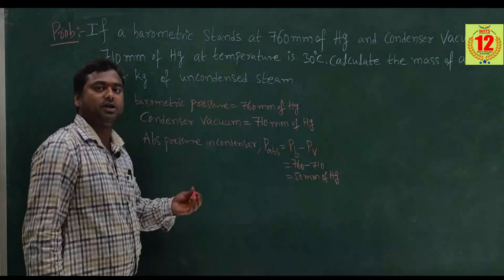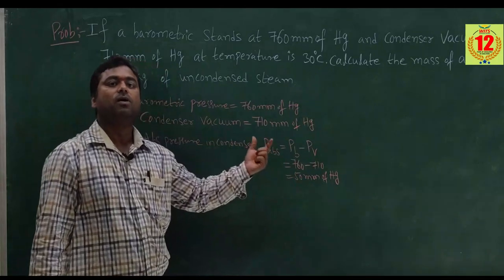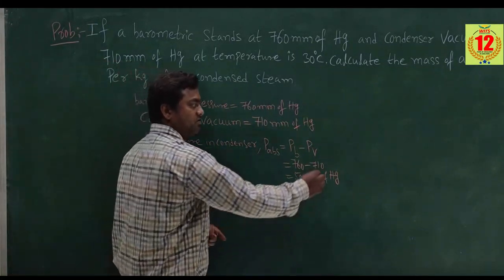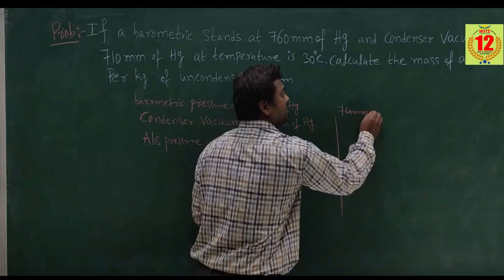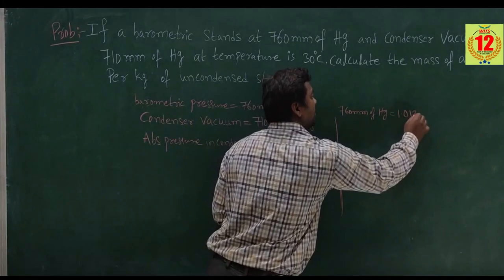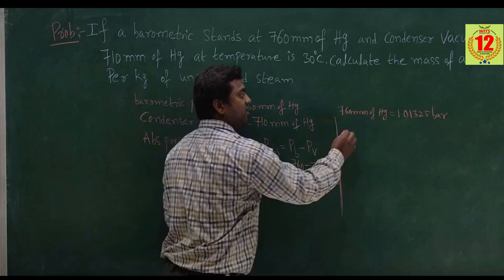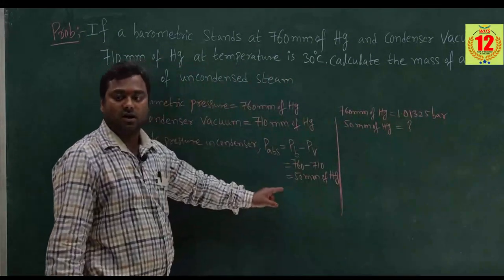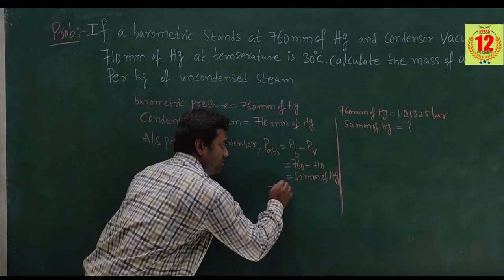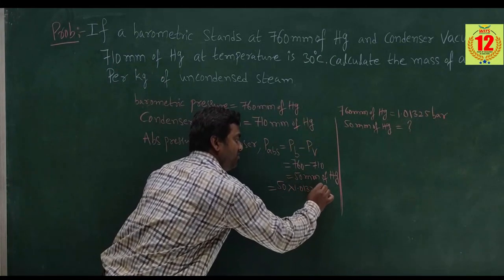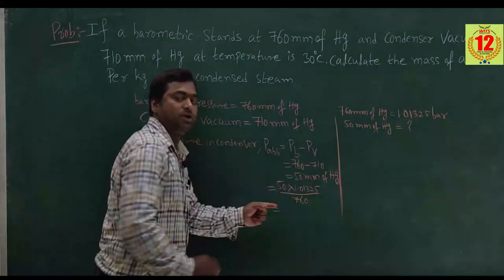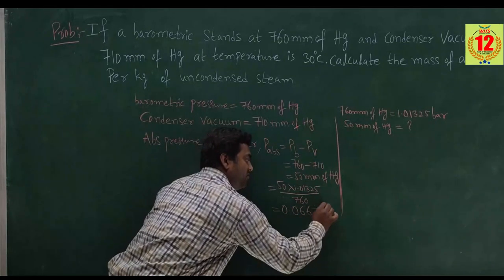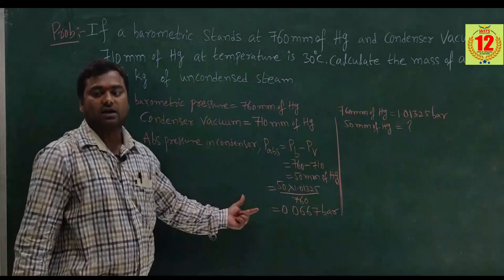We need to calculate the mass, so we have to convert 50 mm of Hg into bars. That conversion gives us 50 into 1.01325 divided by 760, which simplifies to 0.0667 bar.